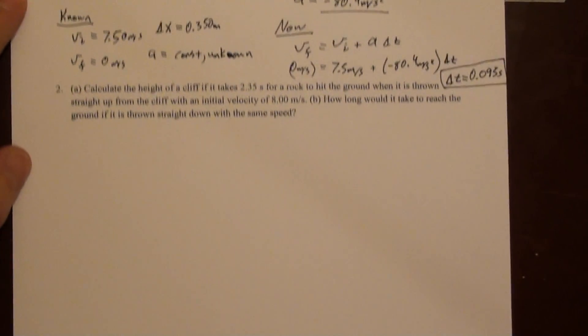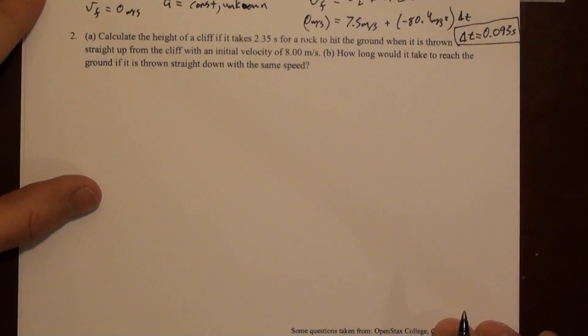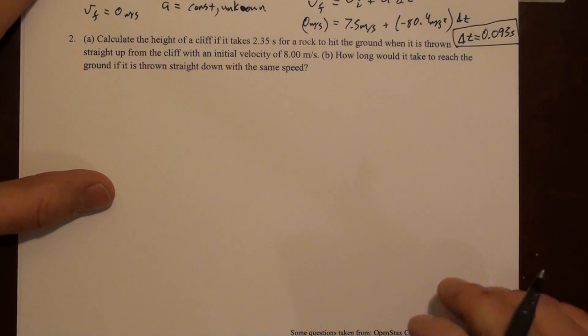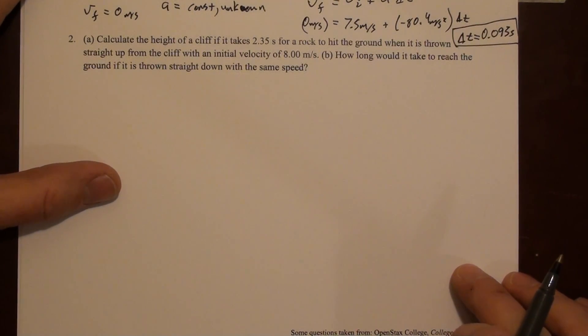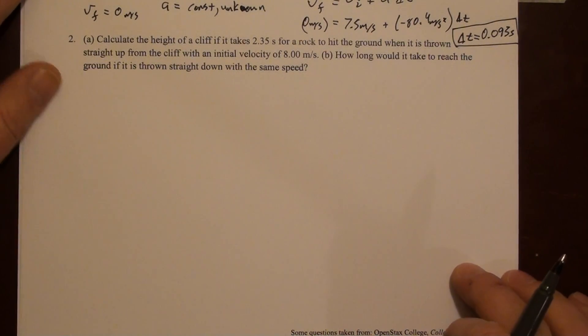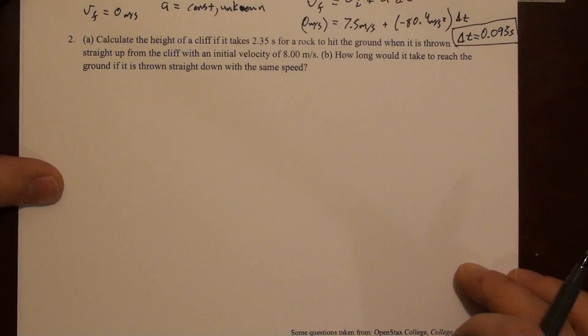So we can look at problem number two. Problem number two says: calculate the height of a cliff if it takes 2.35 seconds for a rock to hit the ground when it is thrown straight up from the cliff with an initial velocity of 8 meters per second. So we'll start with that.